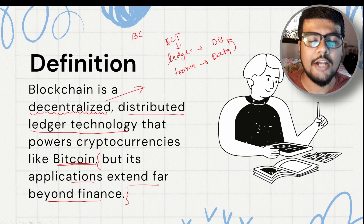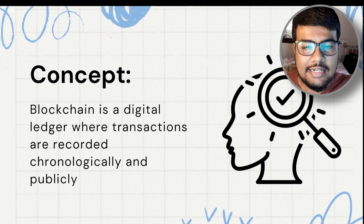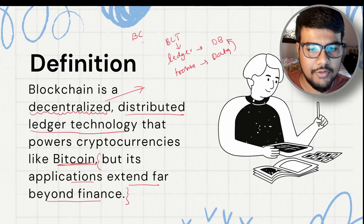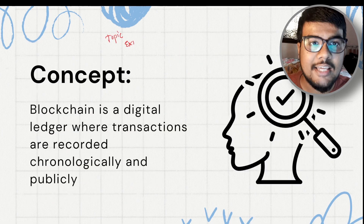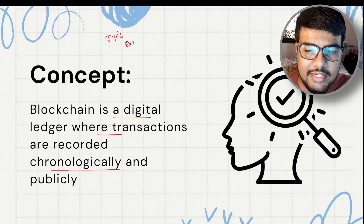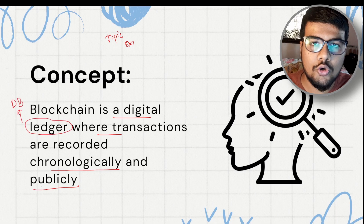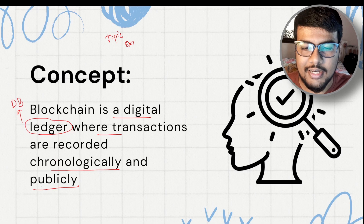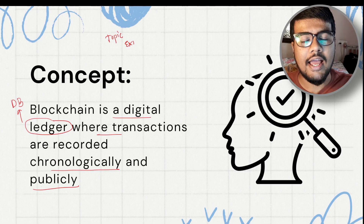When answering in an interview, use the keywords I've underlined. Follow a clear explanation flow: first tell about the topic, then give a specific example like Bitcoin. Blockchain is a digital ledger where transactions are recorded chronologically and publicly. Ledger means database, data is equivalent to transaction, and transactions are stored in the ledger publicly — visible to everyone in the network.